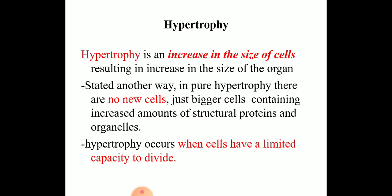Let us describe various types of cellular adaptations. What is hypertrophy? Hypertrophy is an increase in the size of the cell, resulting in an increase in the size of the organ. In hypertrophy, there are no new cells — just a bigger cell that contains an increased amount of structural protein and organelles. Hypertrophy occurs in cells which have a limited capacity to divide, such as striated muscle and heart, and whenever there is increased workload, they undergo hypertrophy to accommodate the demand.